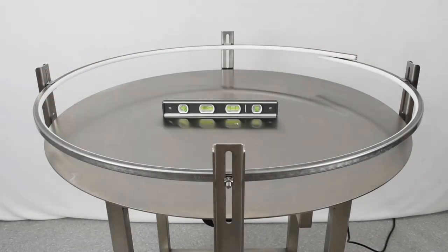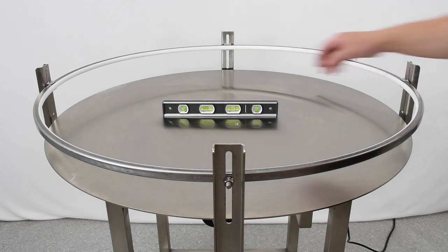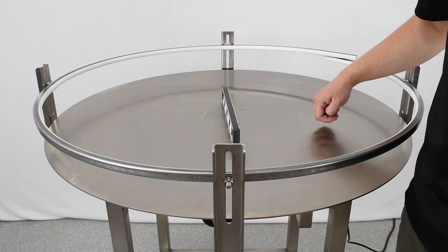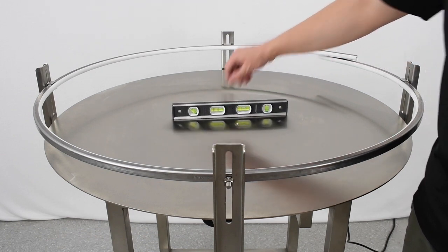We are almost ready to attach our accumulation table, but we need to level it first. Place your level on the line between two of the mounting posts. Do the same thing in the perpendicular direction. Get a sense for which of the legs of the accumulation table need to be raised or lowered for a smooth surface.